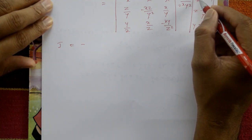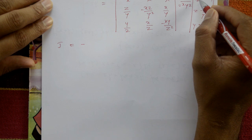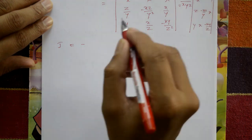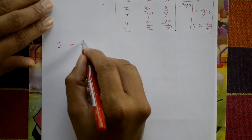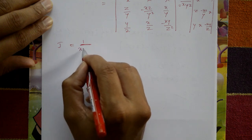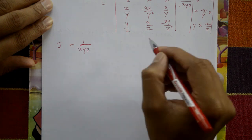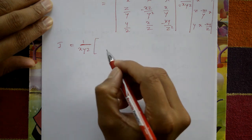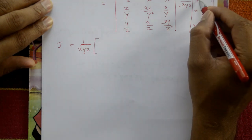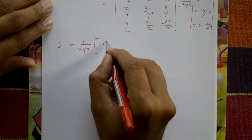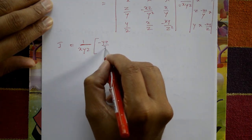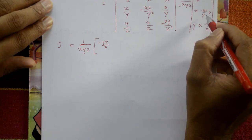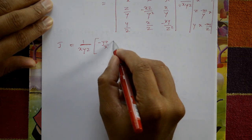J equals 1/(xyz) times the determinant. Inside the bracket, first element involves −yz/x and we proceed with cross multiplication of the 2×2 minors.